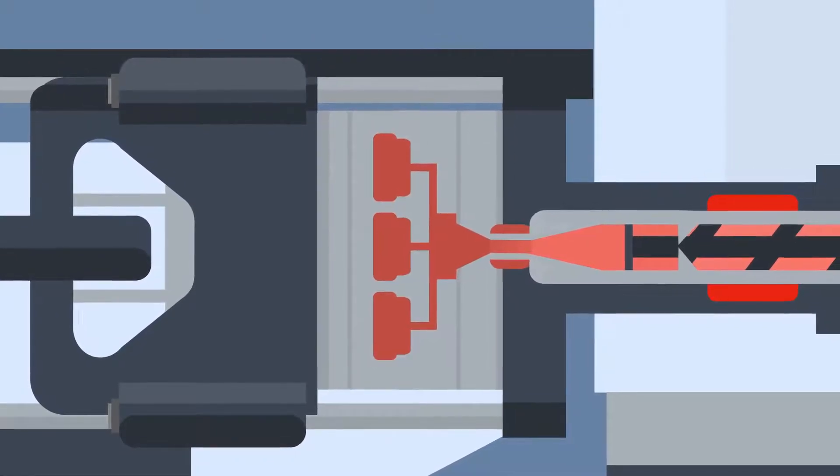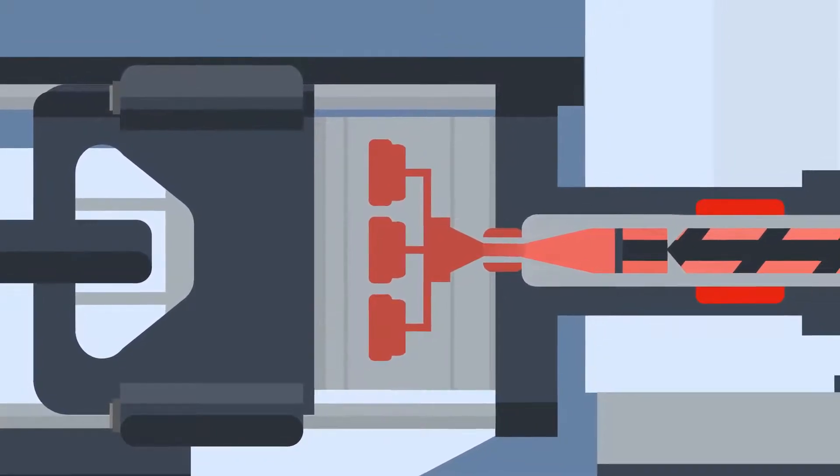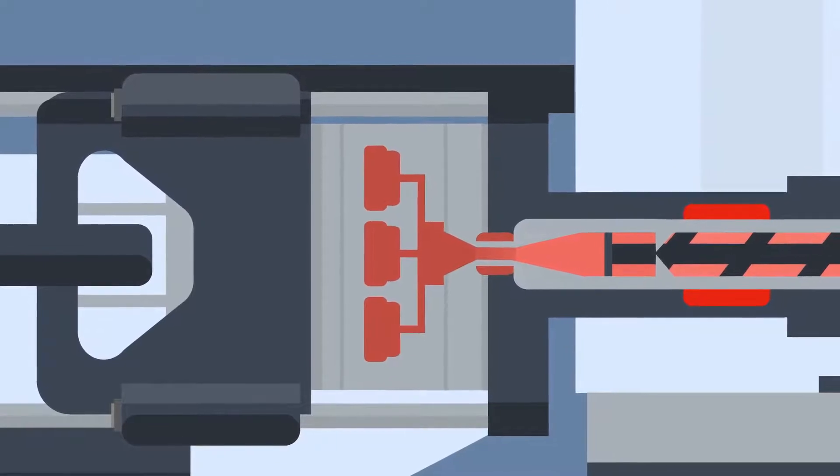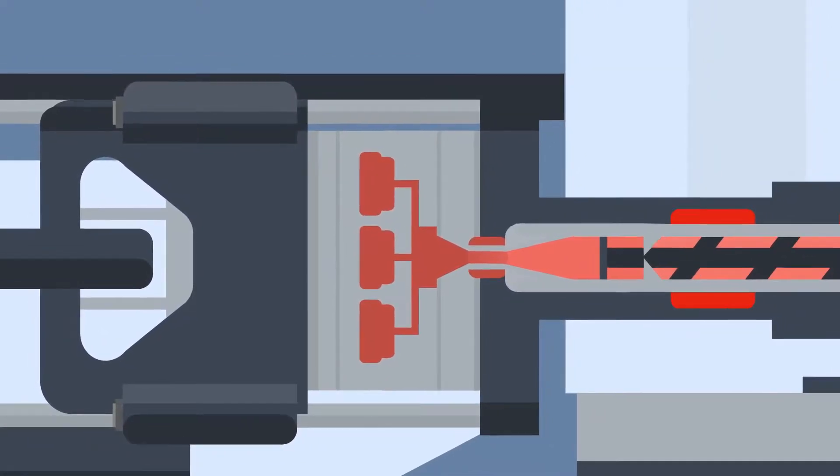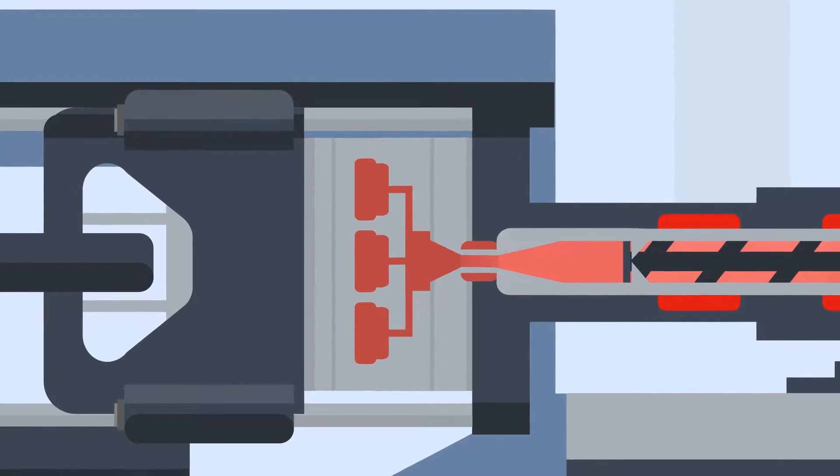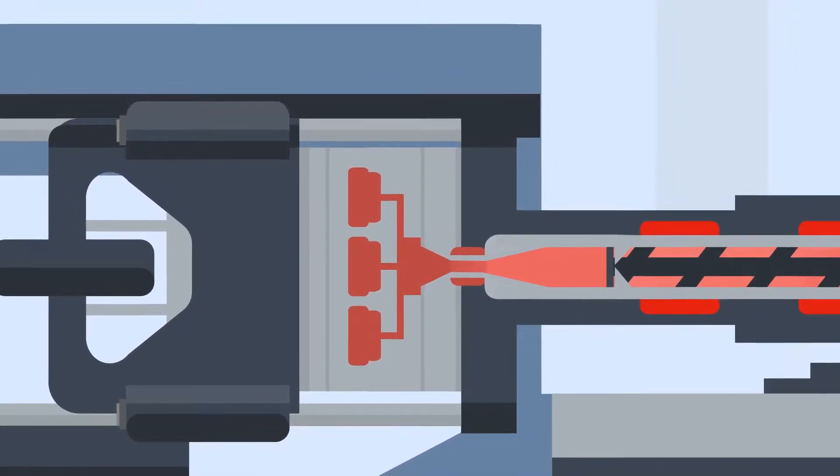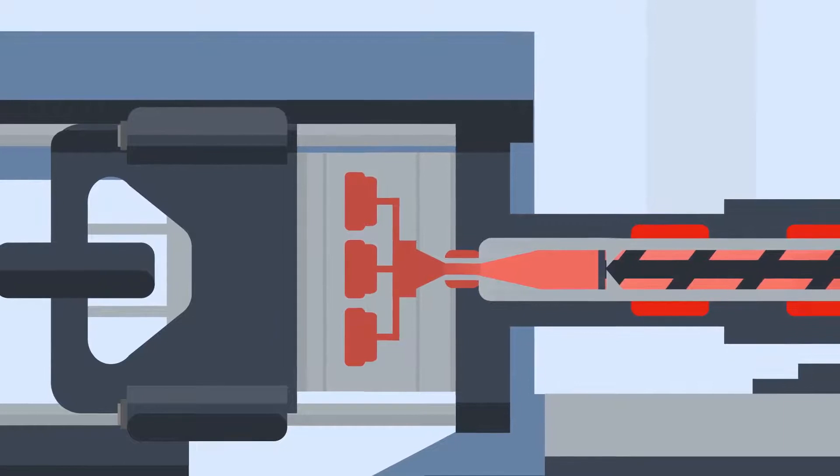When the tool cavity is mostly full of liquid, a holding phase begins, where the part starts to take its final form. After a set holding time, the screw will screw back to its set point. This happens at the same time as the cooling phase of the cycle.